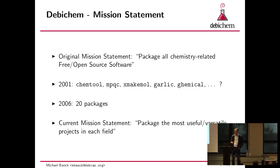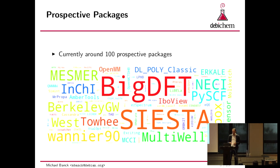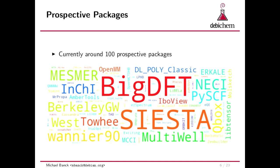Right now we try to pick the best ones. Just last week there was another article in the Journal of Computational Chemistry about pyradius, a well-done medium-sized Python library for rare events — so there's a new open source one coming up every week, I have the feeling. I have another 100 packages on a list of prospective packages, which are all free software.